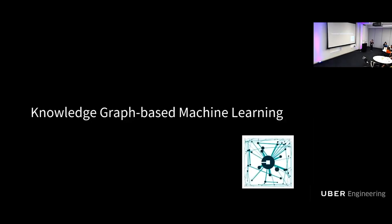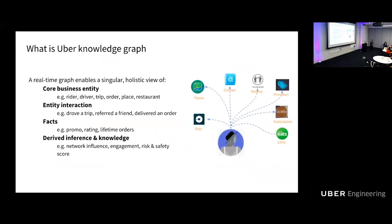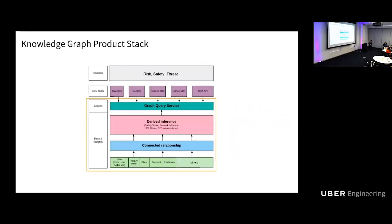Finally, I will talk about the Uber Knowledge Graph platform. What is Uber Knowledge Graph? It is a real-time graph that enables a singular and holistic view of all Uber entities — such as driver, rider, trip, and orders — and the interactions between those entities. For example: a driver drove a trip, a rider took the trip, a rider referred a friend, and other facts like ratings and lifetime orders. We derive inferences from this information, like risk and safety scores for the rider. We build connections between entities and derive inferences, then the Knowledge Graph provides a graph query service allowing business solutions to be built on top for risk, safety, and threat detection.